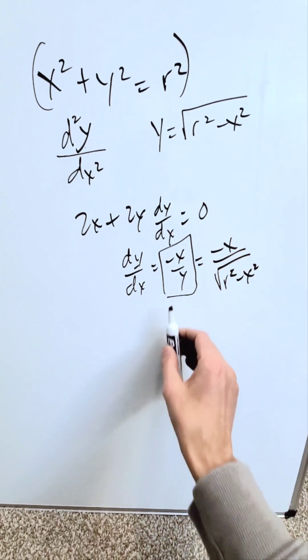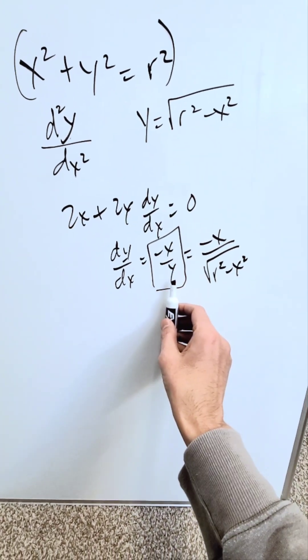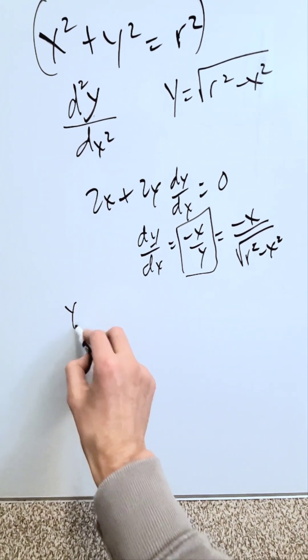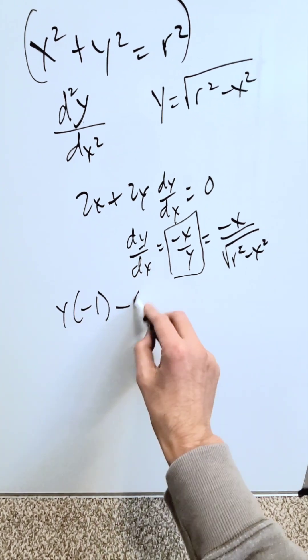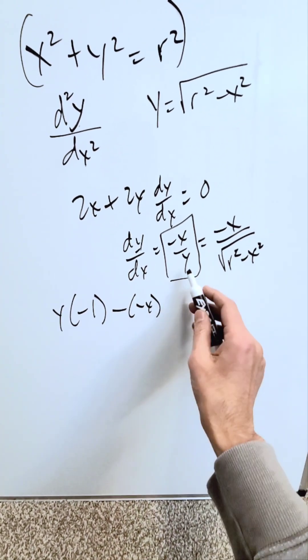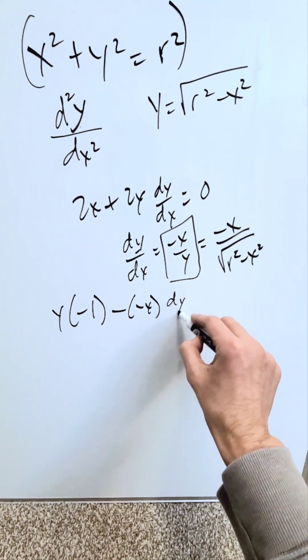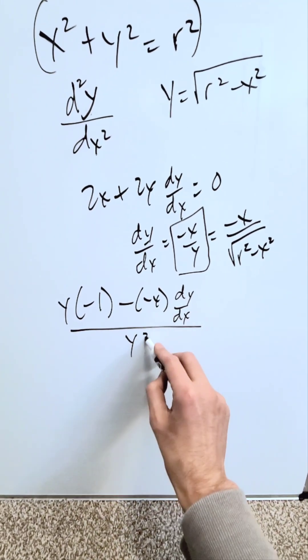I have an f function and a g function. Run minus x over y through your quotient rule. You'll have your g function times the derivative of your f function which is minus 1, minus your f function times the derivative of your g function which is dy/dx, over your g function squared.